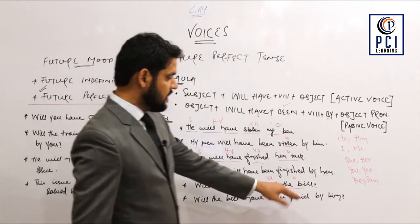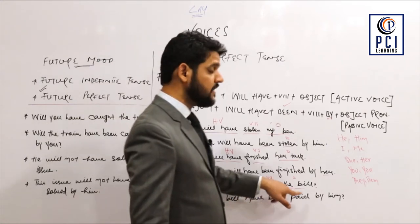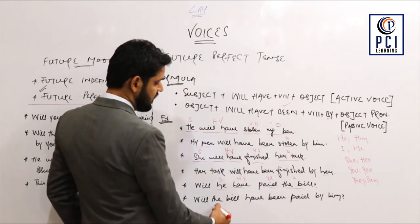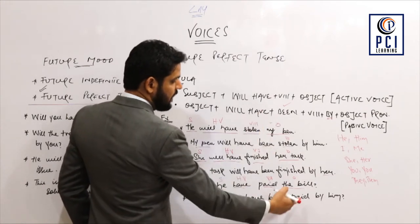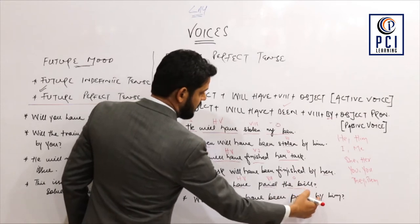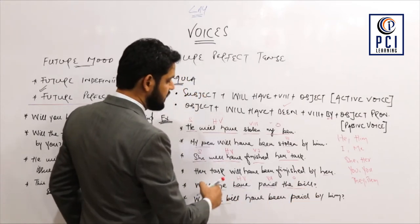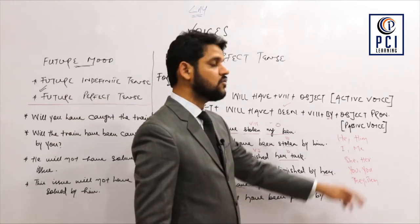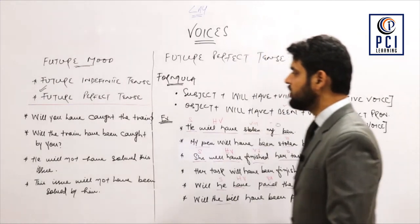Since this is an interrogative, 'the bill' as object will come to the subject position. So: 'Will the bill have been paid by him?' — 'the bill' replaces the subject position, then 'have been' according to formula, then the third form 'paid', then 'by him' — because 'he' as subject becomes 'him' according to the personal pronoun chart.